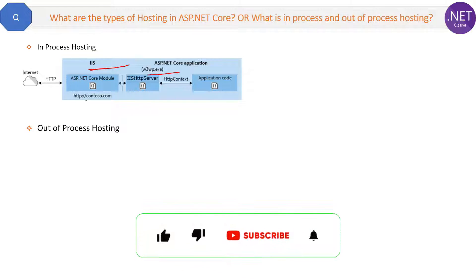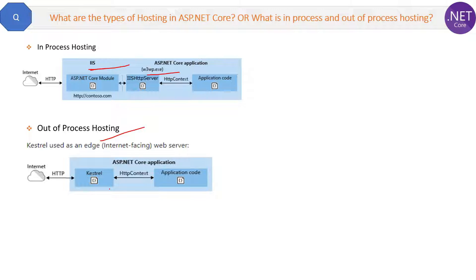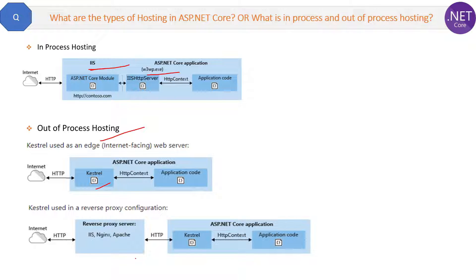The next type of hosting is out-of-process hosting, and it is again of two types. In the first type, only one web server is used and that is Kestrel — a lightweight web server. In the second type, two web servers are used: one is Kestrel, and the second can be IIS, Nginx, or Apache.